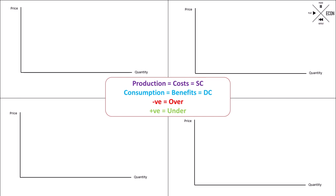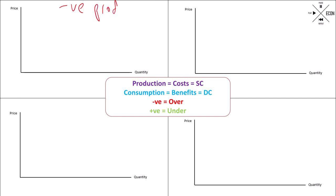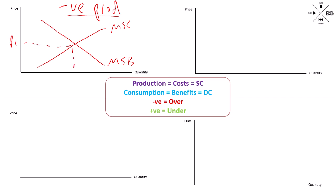Let's start off with negative in production. The way you start these diagrams is to start off with the socially optimum level, where marginal social costs equal marginal social benefits. This is the price and quantity you want to get to. If there are negative externalities, that means currently in the free market they're being over-consumed, so we need to produce less of them to get to Q1.